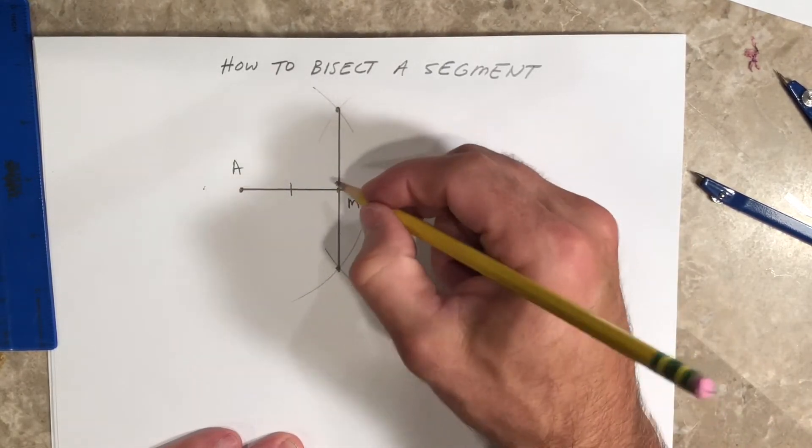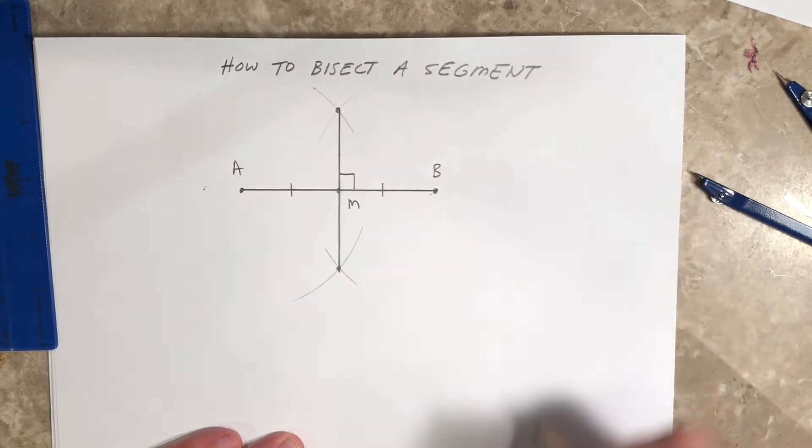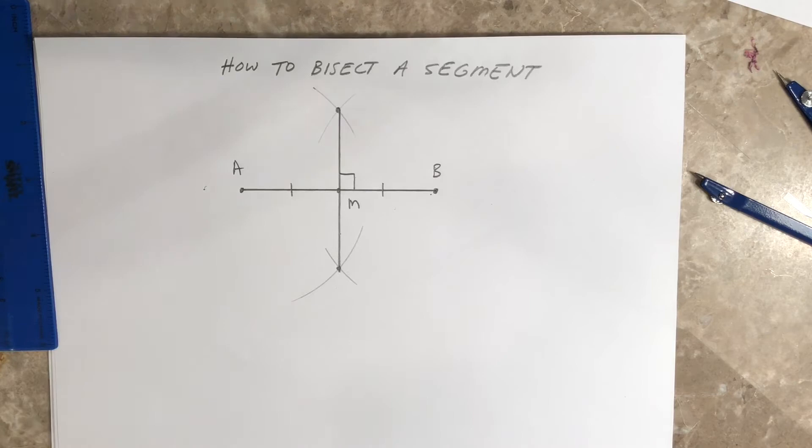But also, a little bonus feature: I also did it at 90 degrees. So this is actually a perpendicular bisector.